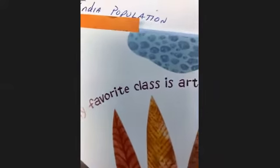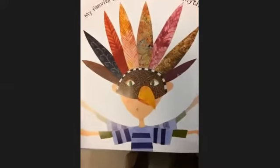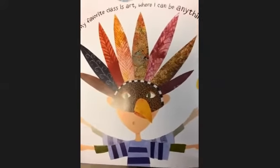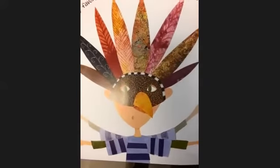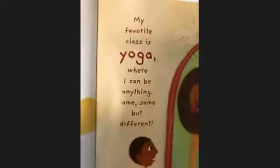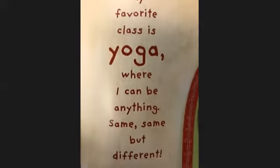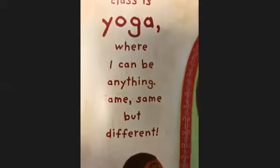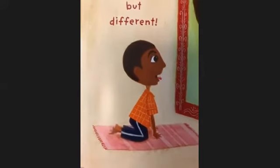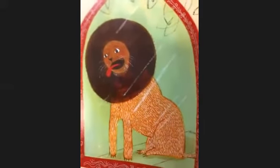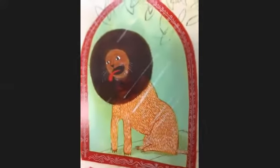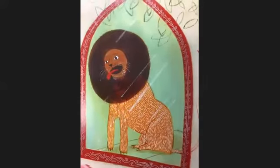Elliot says: 'My favorite class is art, where I can be anything' — there he is, maybe a peacock or an eagle, imagining in art class. Kailesh responds: 'My favorite class is yoga, where I can be anything — same same but different.' There's Kailesh looking in the mirror and imagining himself as a big lion. You can imagine anything!